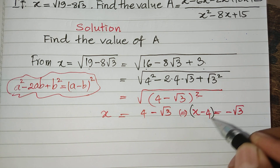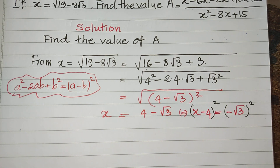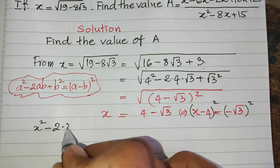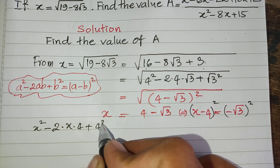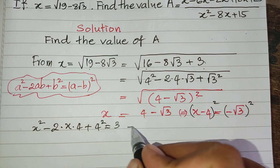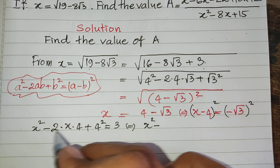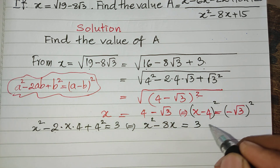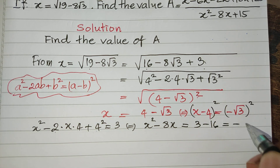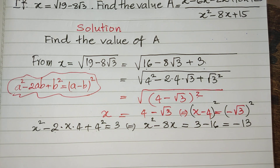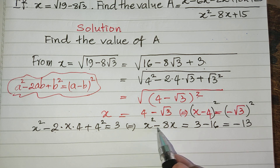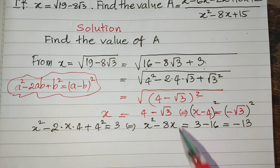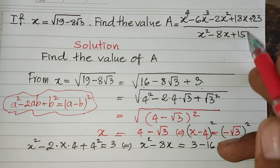Now I raise both sides of this equation to the square. Using the formula, I get h squared minus 2 multiplied by h multiplied by 4 plus 4 squared equals 3. So h squared minus 8h plus 16 equals 3, which gives h squared minus 8h equals negative 13.